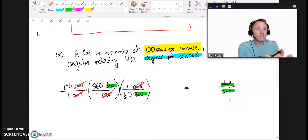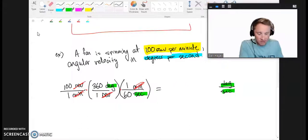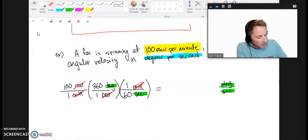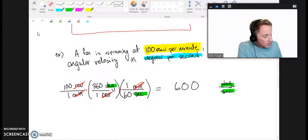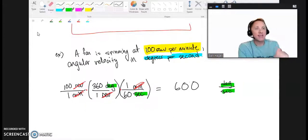Once you get the units to match, you're done. Let's put this in the calculator carefully. If I did it all right, I'm getting 600 degrees per second. So, if that fan is spinning at 100 revolutions a minute, the angular velocity, the speed at which the angle is changing, is 600 degrees per second.